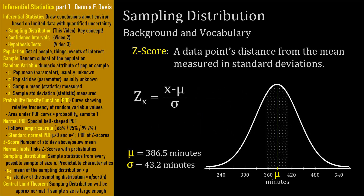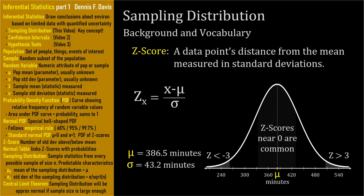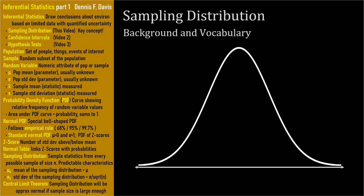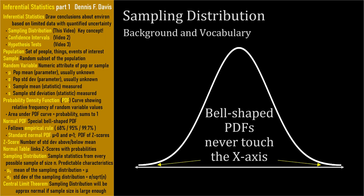Z-scores near 0 are common because the probability density near the mean is high. Z-scores at plus or minus 3 or more are not common because the probability density out there is lower. Theoretically, these bell-shaped curves extend infinitely in both directions, so the curve gets closer and closer to the horizontal x-axis but never touches it. When you draw a bell-shaped curve for a homework or test problem, leave a tiny gap to let your instructor know you understand the curve extends further in both directions.